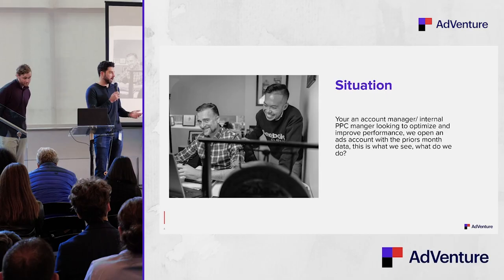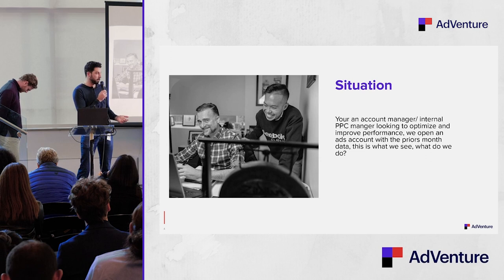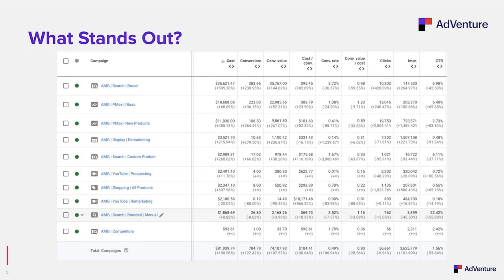Quick exercise to start. The situation: you're an account manager looking to optimize and improve performance. You open an ads account with prior month's data — now what do you do? It's messy. It's a table. A lot of numbers, a lot of percent changes. Where do your eyes go? What do you do? It's really, really confusing.